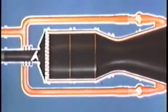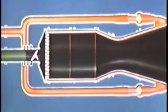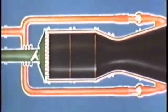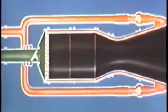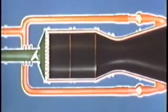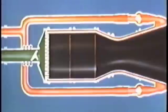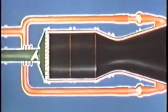Liquid oxygen is fed to the center of the injector, and flows around the radial alcohol passages to the rear of the injector face, and through the injection orifices into the chamber where combustion takes place.